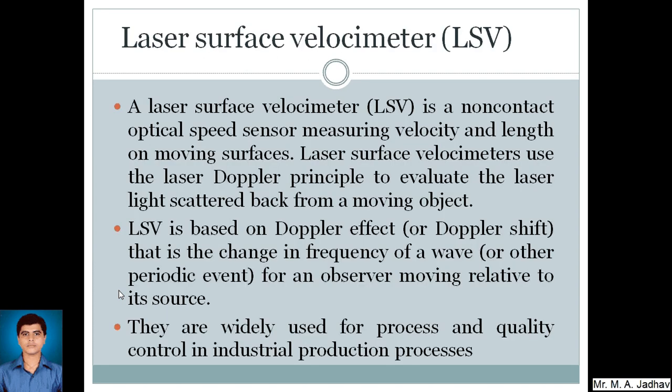The next is laser surface velocimeter, that is LSV. A laser surface velocimeter is a non-contact optical speed sensor measuring velocity and length on moving surfaces. Laser surface velocimeters use the laser Doppler principle to evaluate the laser light scattered back from a moving object. LSV is based on the Doppler effect or Doppler shift, that is the change in frequency of a wave or other periodic event for an observer moving relative to its source. They are widely used in processes and quality control in industrial production processes.